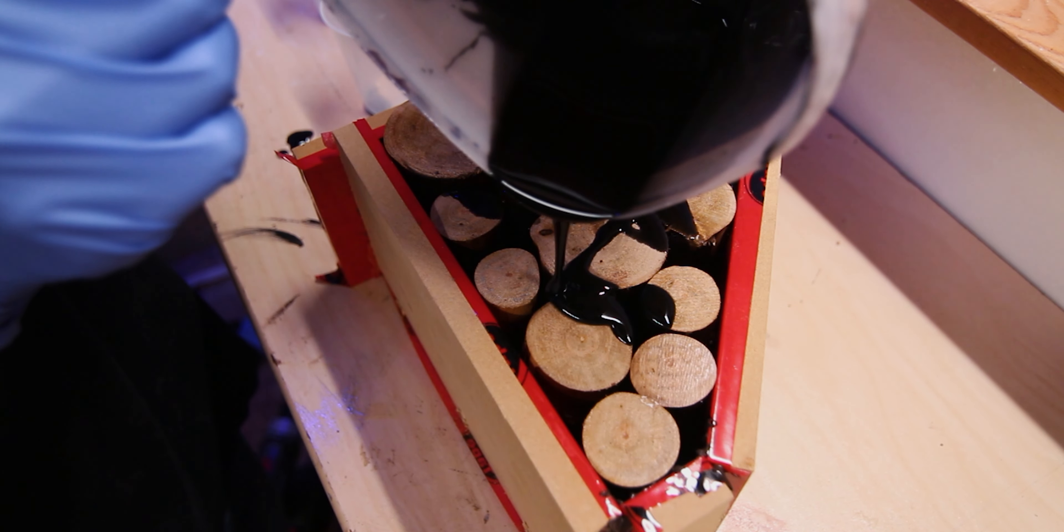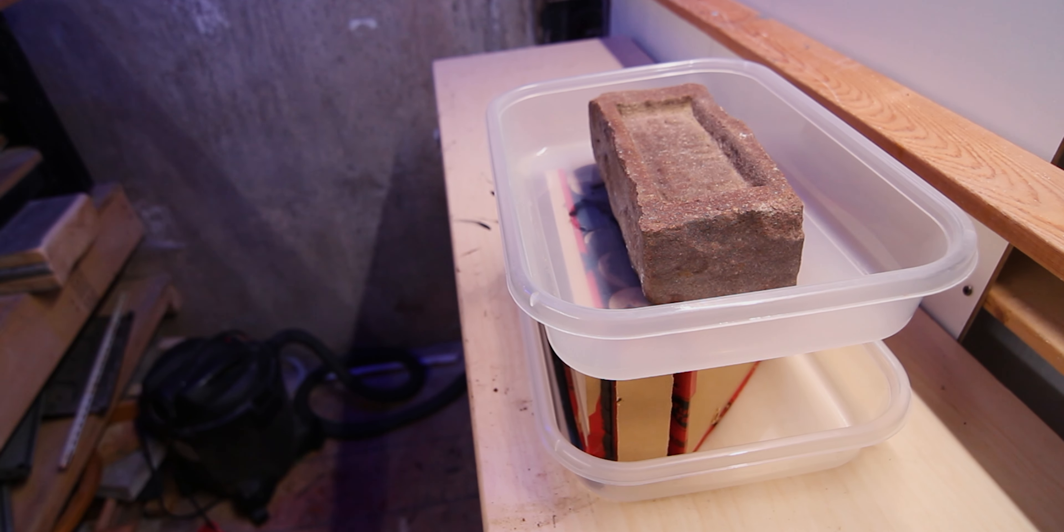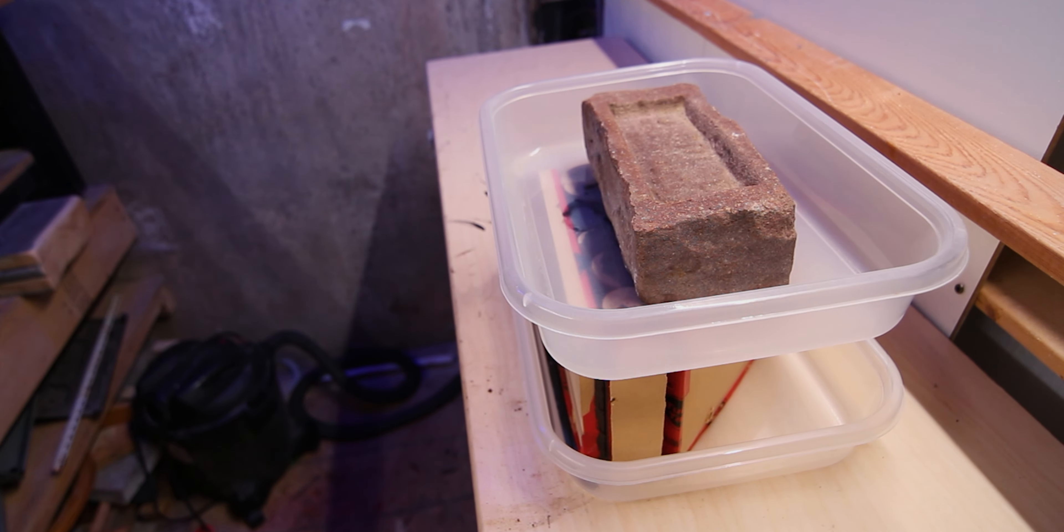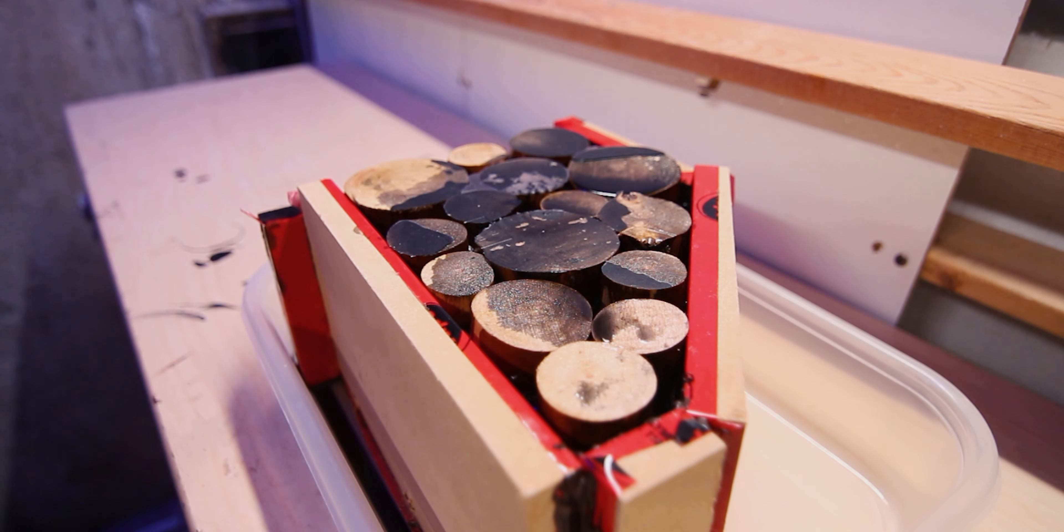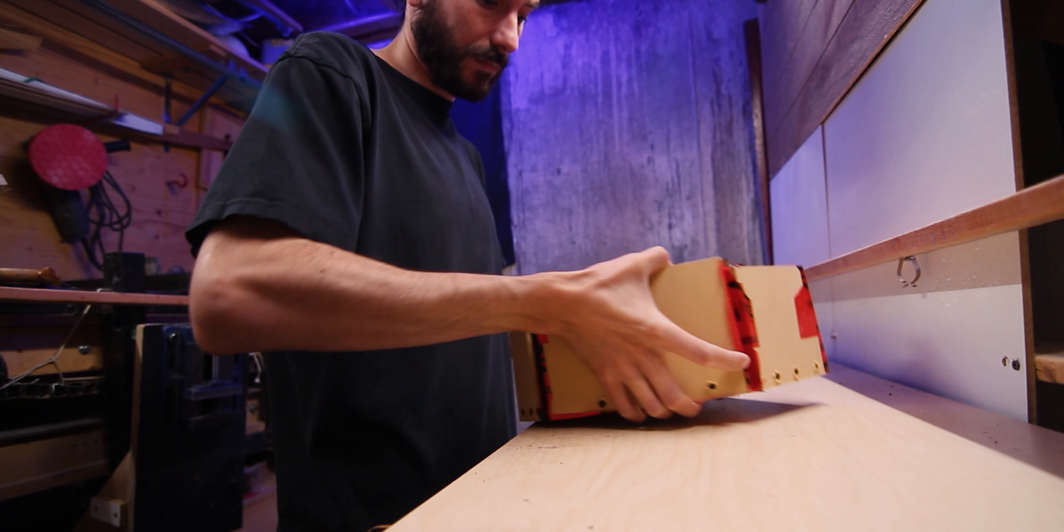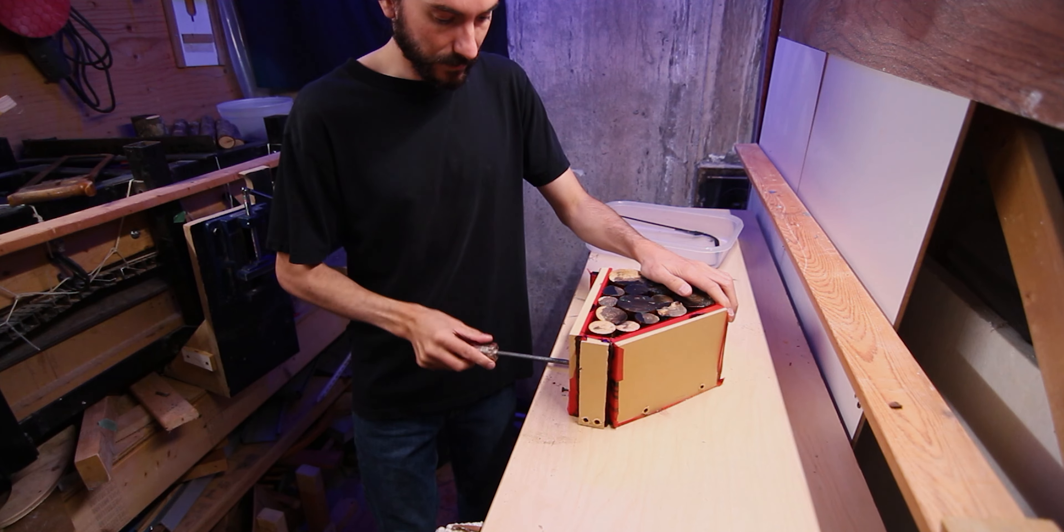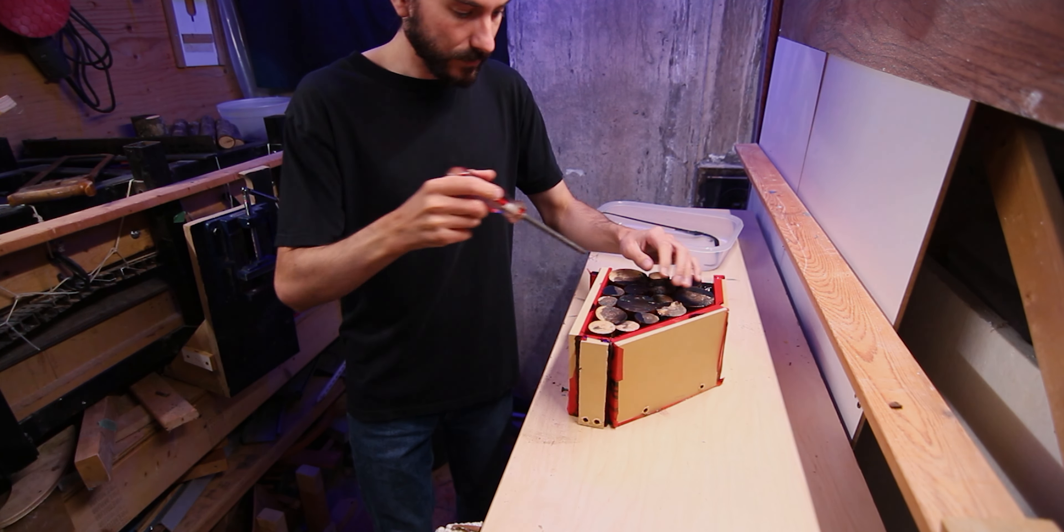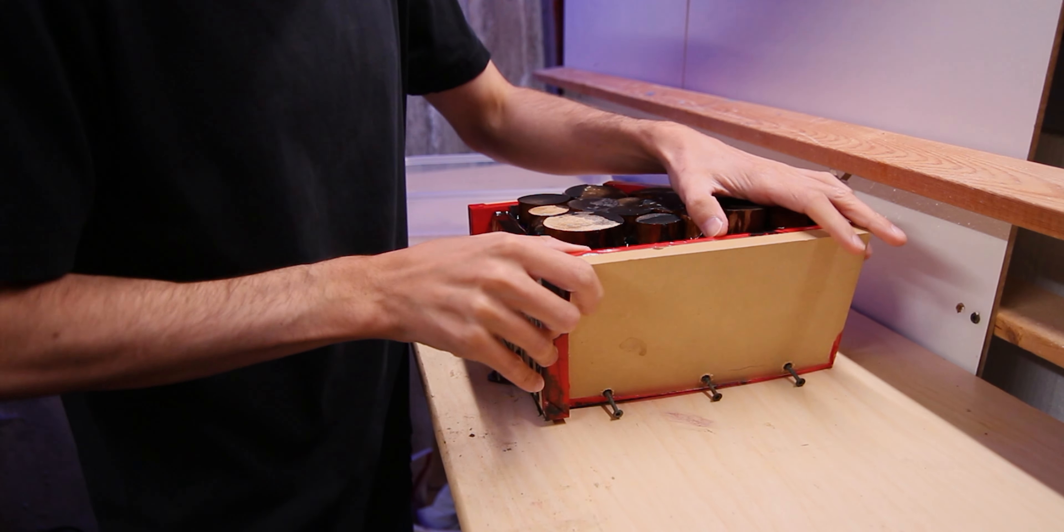With my resin mixed, I'm going to add in my black pigment and mix it again. Then I'm going to slowly pour it into the mold. By pouring it slow, it's going to allow the resin to seep in and around the cracks, and this will help prevent bubbles in the final cast.